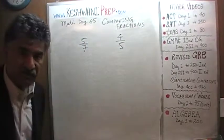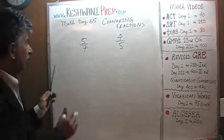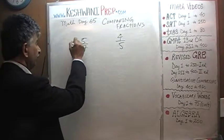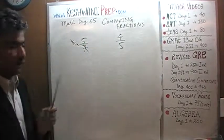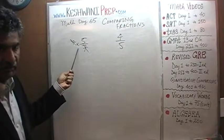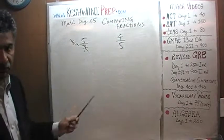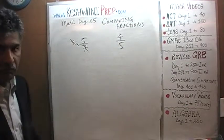The question is how do we get rid of this 7 from the bottom? It's very simple. Multiply this fraction by 7. If you multiply that fraction by 7, the 7 is going to kill that 7. But we can't simply multiply that fraction by 7 because we are asked to compare the two fractions. Whatever we do to this fraction, we must do to that fraction.